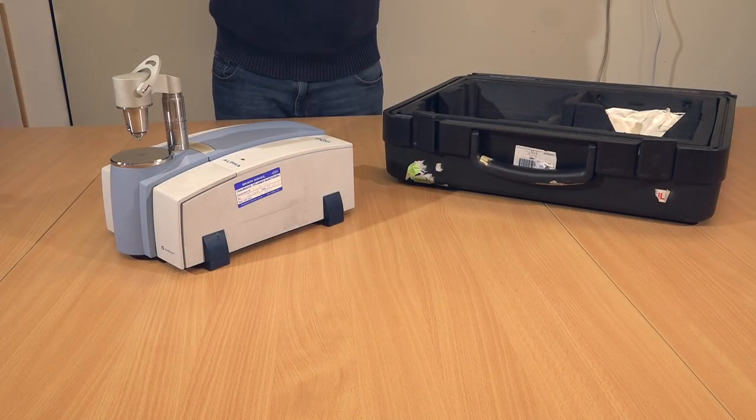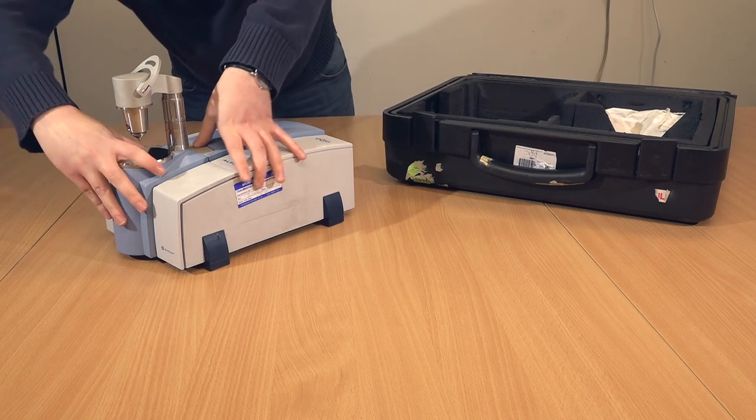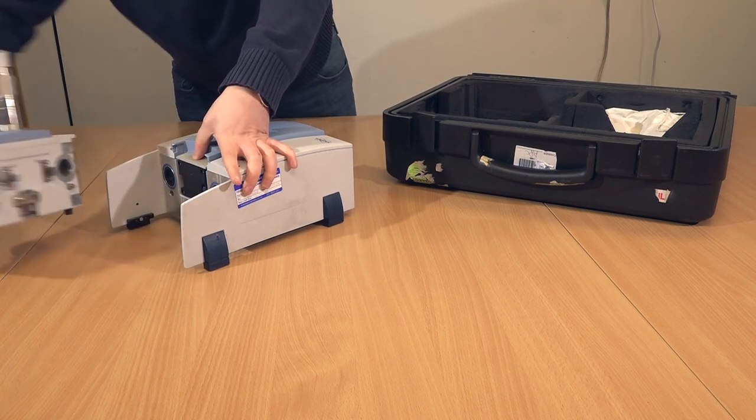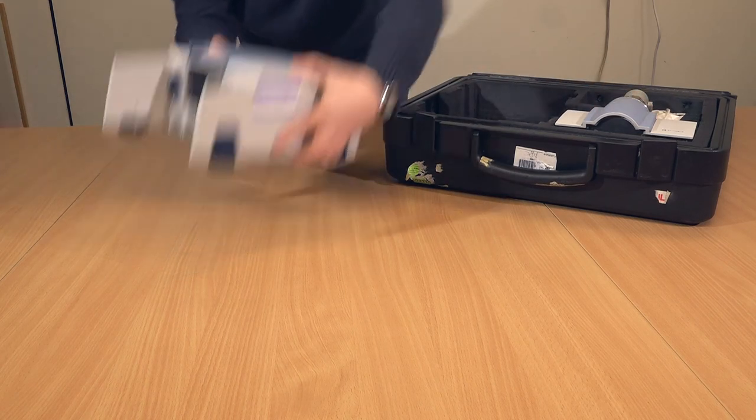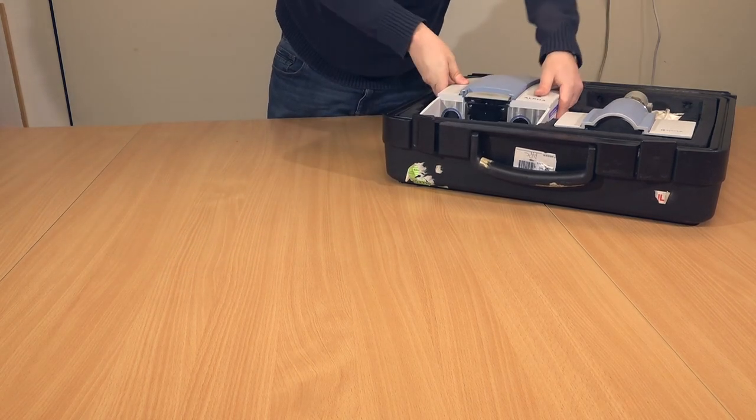Dismantle the IR spectrometer by pushing down hard on the gray button until it clicks. Then slide the front part forward and lift up and away from the back section. Pack the two spectrometer pieces back into the suitcase carefully as shown. Close the lid and ensure both clasps close completely.